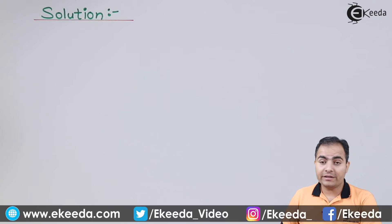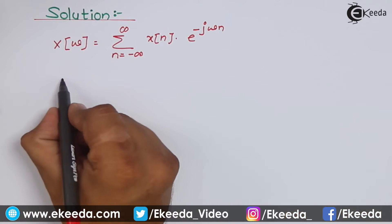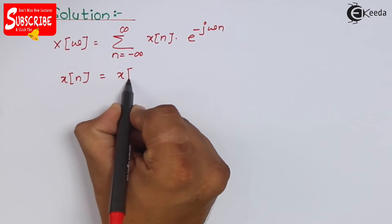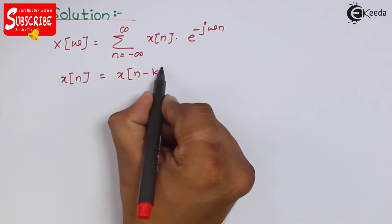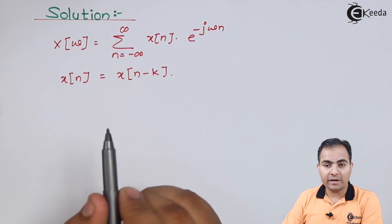First of all, we will write the definition of discrete time Fourier transform. Now in this property my input x[n] is x[n-k]. I will replace this x[n] by x[n-k].